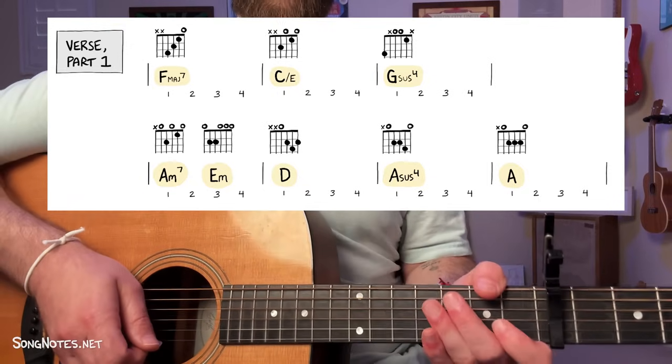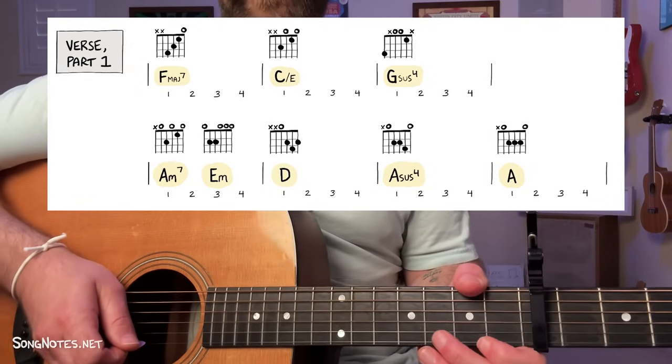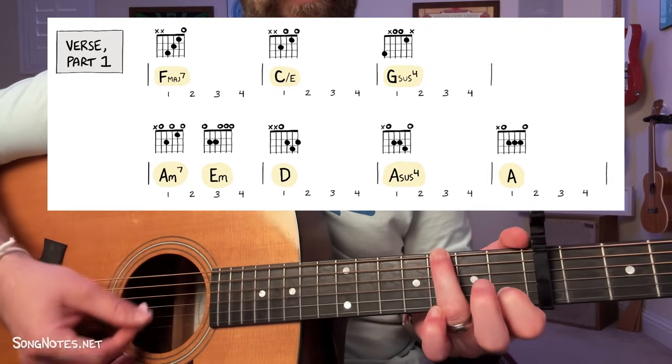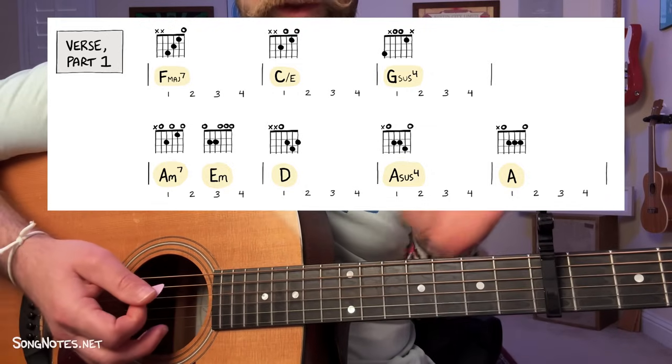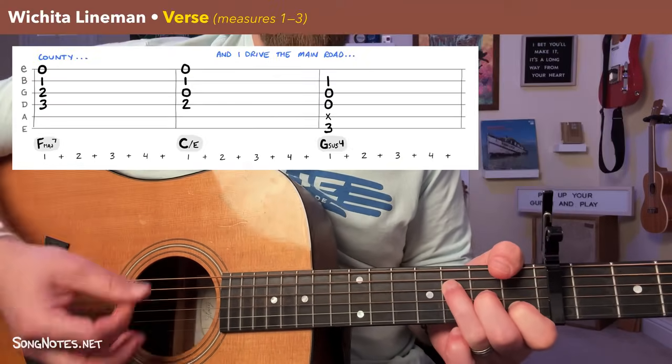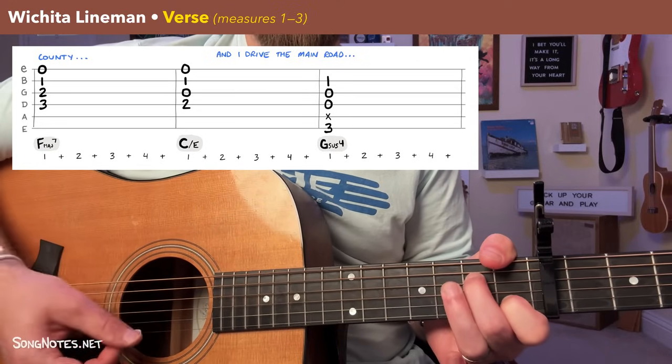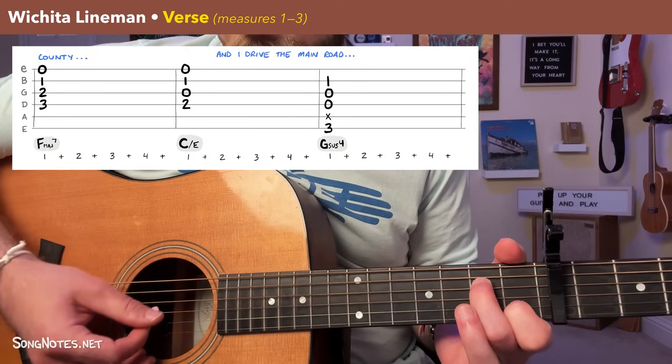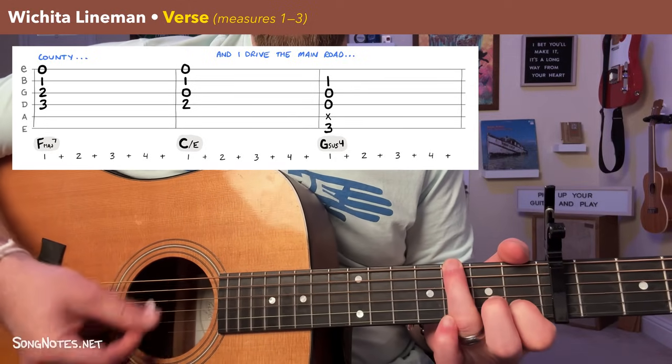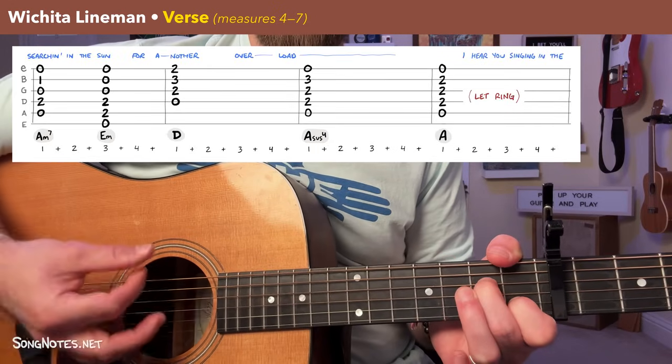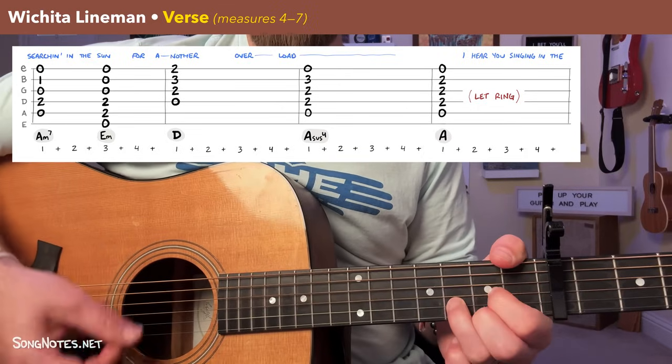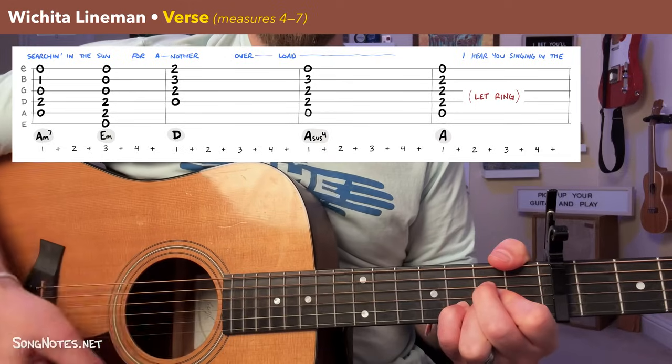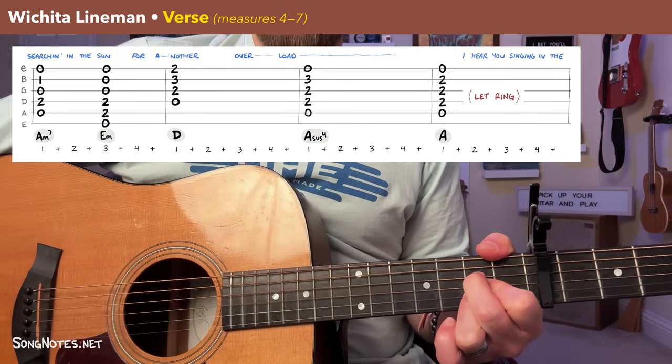Now let's look at the verse. Let me play through it just simply to give you a lay of the land here. Nothing too crazy going on here, which is good. We've actually learned the trickiest thing you're going to do is that G sus four, and we've actually already looked at a version of that. So this is a bit more approachable. So we start off with an F major seven to a C over E, which is just a C major chord with no fifth string note. Then we go to a G sus four, then an A minor seven, quickly to an E minor, then to a D major, then A sus four, then we let the A major ring out. So some tips here.